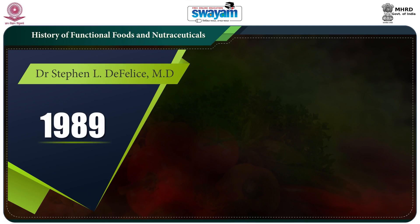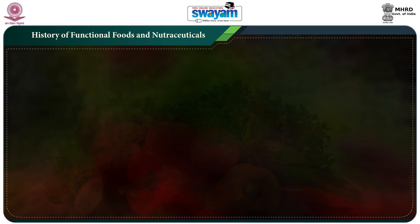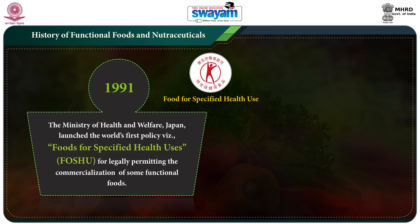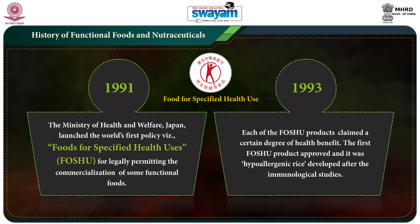In 1989, Dr. Stephan L. DeFelice coined the term 'nutraceutical,' a hybrid or contraction of nutrition and pharmaceutical, and established the Foundation for Innovation in Medicine in 1976 in New York. In 1991, the Ministry of Health and Welfare Japan launched the world's first policy — Foods for Specified Health Uses (FOSHU) — legally permitting the commercialization of some functional foods. Each FOSHU product claimed a certain degree of health benefits. The first FOSHU product approved in 1993 was hypoallergenic rice developed after immunological studies.